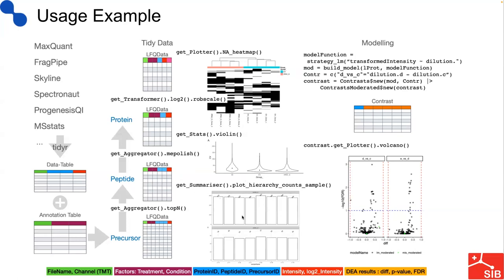For instance, we can summarize the data and plot the number of proteins and the number of peptides in each of the samples. Some statistics can be computed like the CV of the protein in each of the groups. We can show a violin plot for showing the distribution of the CVs of all the proteins, or generate a heat map visualizing the distribution of missing values in the samples.